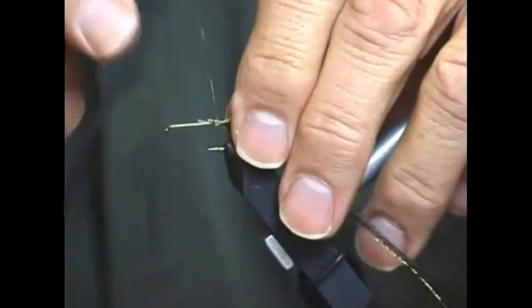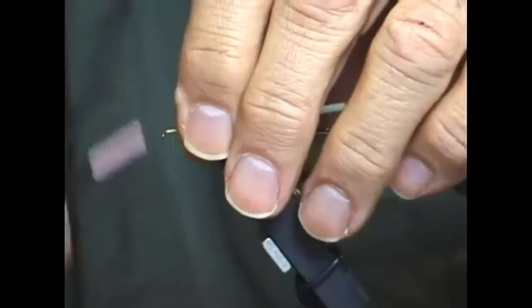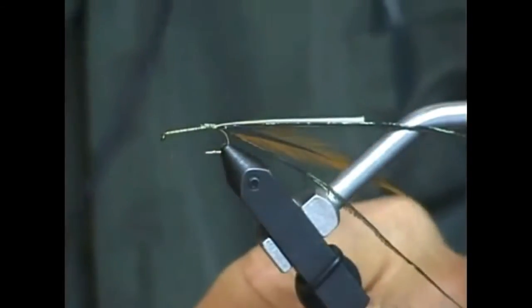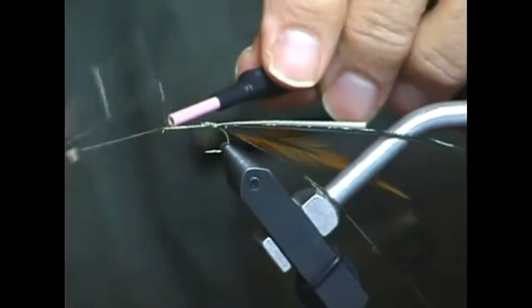Now we're going to move the tying thread forward up the hook shank to just behind the hook eye and we're going to secure it there with a whip finisher but only use two wraps.